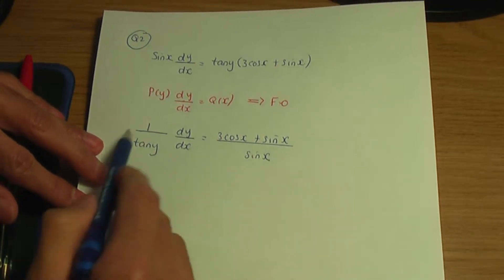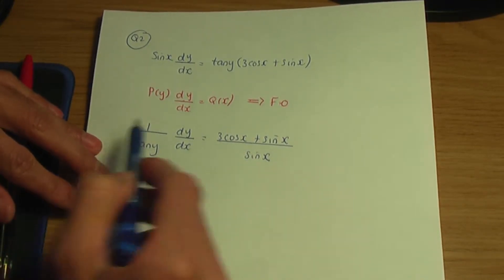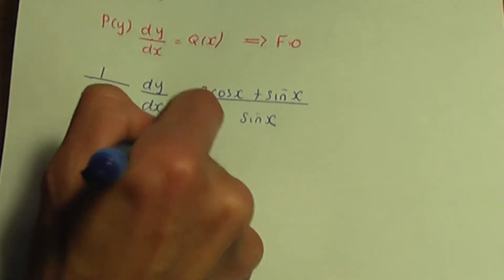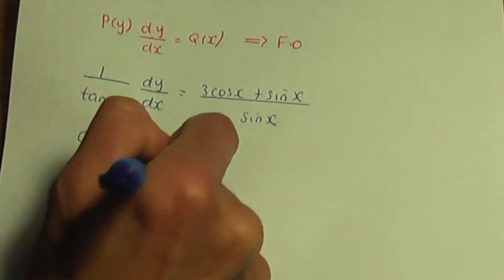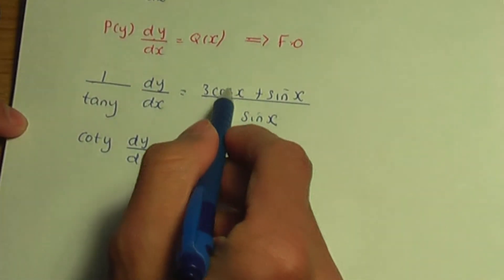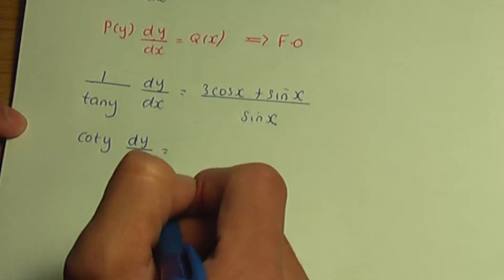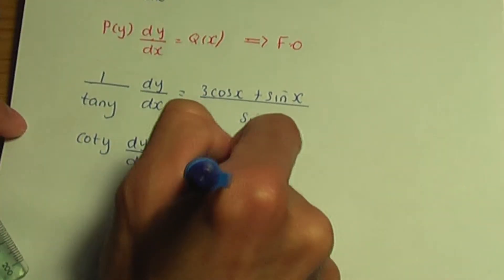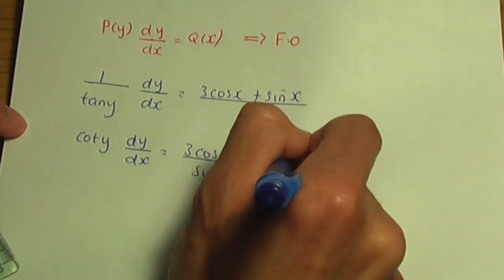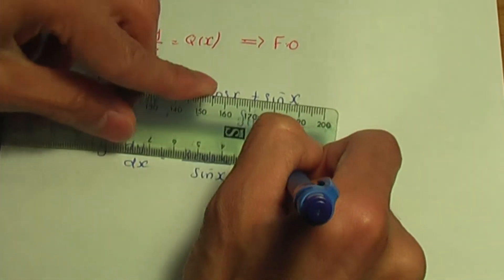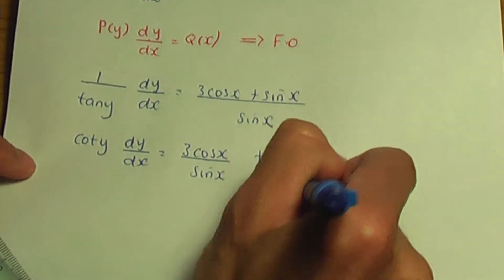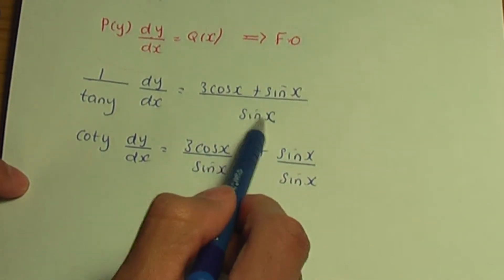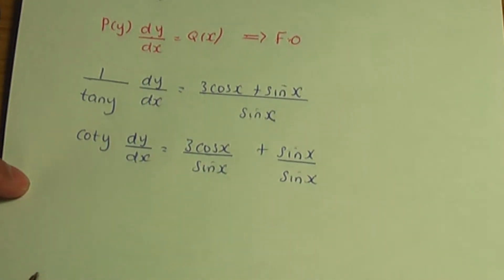Now, let's go one stage further and try and simplify. So 1 over tan is cot. So I can write this as cot y dy over dx. And if I divide each term on the top by sin x on the bottom, we're going to have 3 cos x divided by sin x plus sin x divided by sin x. So I've split this fraction so that for each term in the numerator, I divide it by sin x in the denominator.